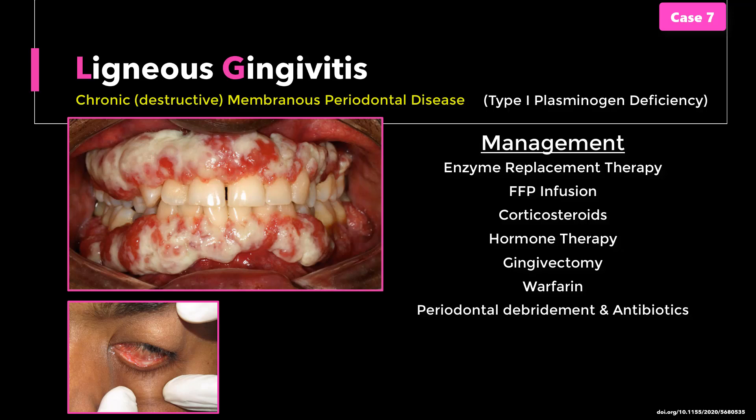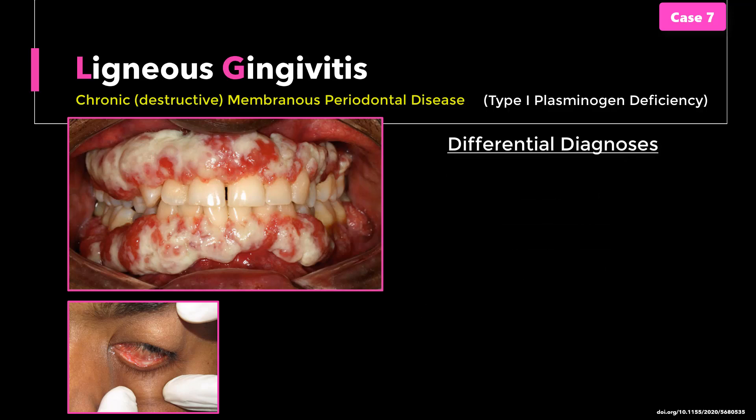Relevant specialties include neurology, ophthalmology, ENT, obstetrics and gynaecology, and equally important, a genetic counselor. Before leaving this case, some lookalike conditions forming part of the differential diagnosis for ligneous gingivitis include: amyloid gingival enlargement — which is why a Congo red stain should be performed; drug-induced gingival overgrowth, where a relevant drug history will be apparent, for instance the use of nifedipine, amlodipine, phenytoin, valproic acid, or cyclosporine.